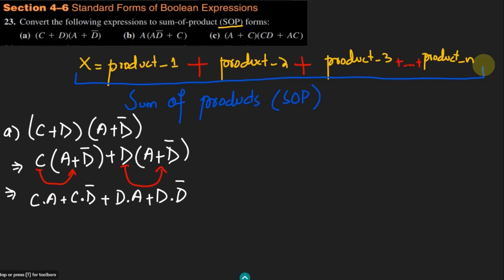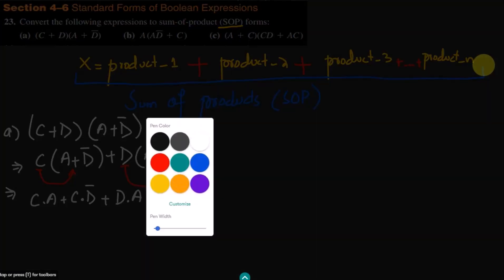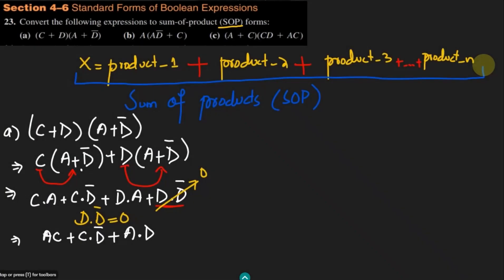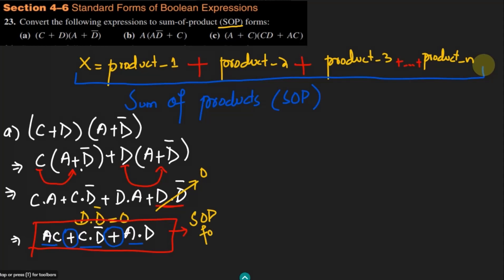According to Boolean algebra, d·d prime equals 0, so that term drops out. Writing the remaining terms: a·c plus c·d prime plus a·d. This gives us three products added together — product 1, product 2, product 3 — and this is the final SOP form for part (a).